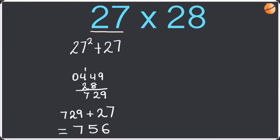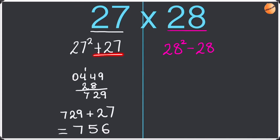Now let's have a look at the second method. So now we are going to use the larger number out of the pair. Let's draw a line in the middle so we don't get confused. The larger number in this pair is 28, so now we're going to square 28. This time we're going to do minus 28 because it's the larger number. Here we did plus 27 because it's the smaller number; minus 28 because it's the larger number.